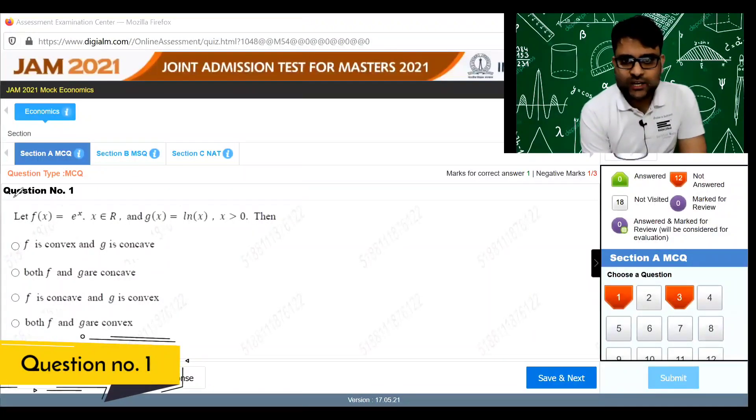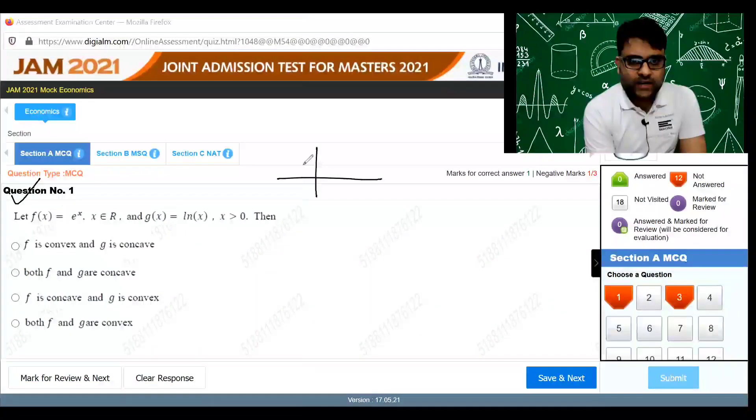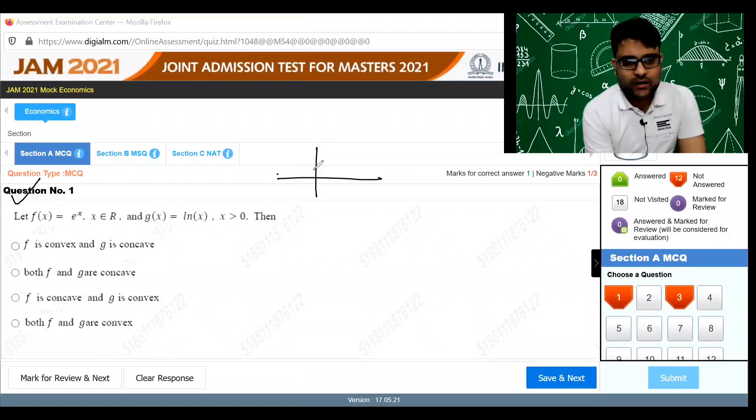So this is the first question in the MCQ section. f(x) is equal to e to the power x. We know that e to the power x is a convex function and we know that ln(x) is a concave function.